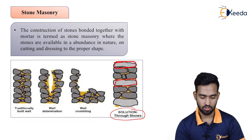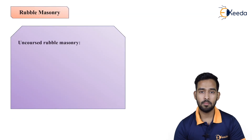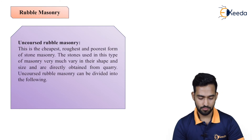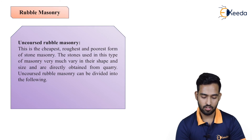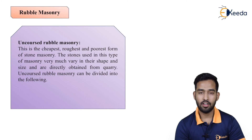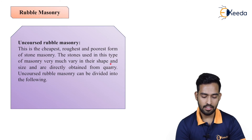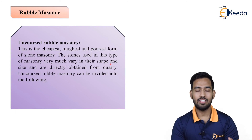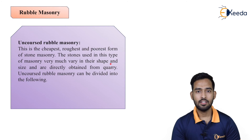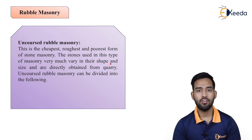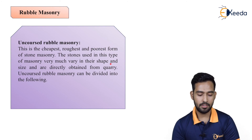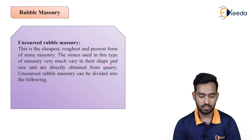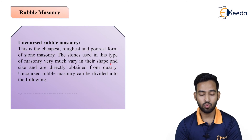Talking about rubble machinery, first is uncoursed rubble machinery. This is the cheapest, roughest, and poorest form of stone machinery. The stones used in this type vary much in shape and size and are directly obtained from the quarry. As the name indicates, these are uncoursed — they are not given a proper shape or size, are all varying in size and shape, and are directly taken from the quarry. Uncoursed rubble machinery can be divided into two parts: uncoursed random rubble and uncoursed but square rubble.